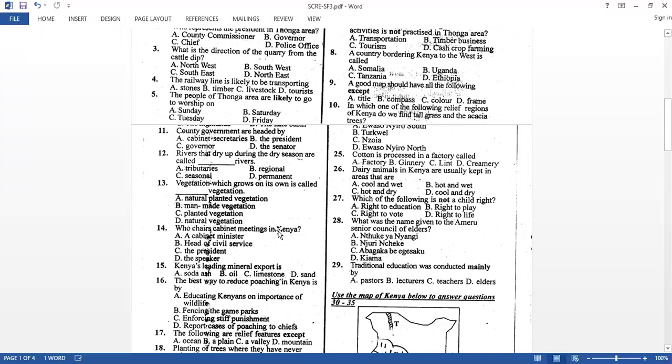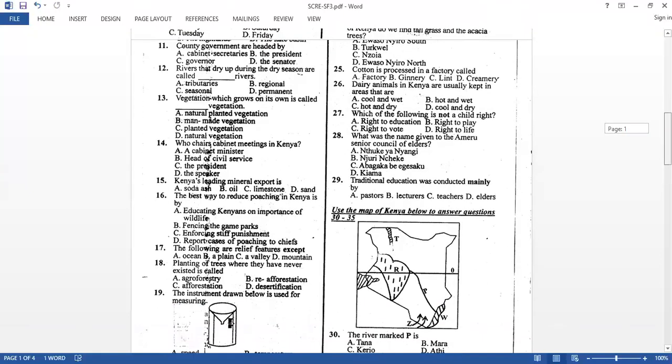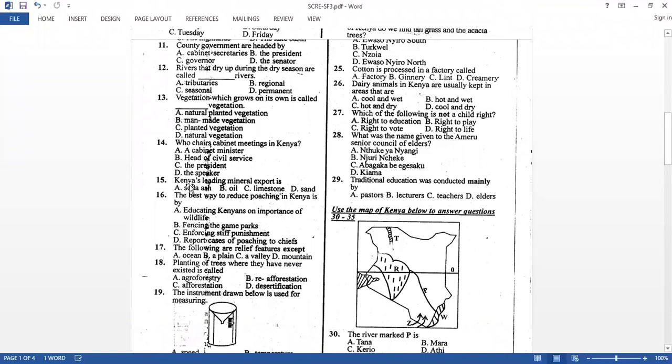Who chairs cabinet meetings in Kenya? Very easy. We have three arms of government. The legislature being headed by the speaker. And we have the National Assembly and also the Senate. So all those two houses we have speakers. Then the executive is what we call the cabinets and it is being headed by the president. And then the judiciary. So the head of the judiciary is the chief justice. That question was very easy. Kenya's leading mineral export is, is what you call soda ash, being mined at Lake Magadi. So soda ash is Kenya's leading mineral export.